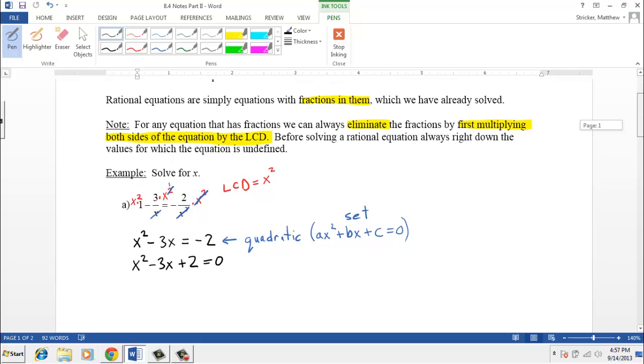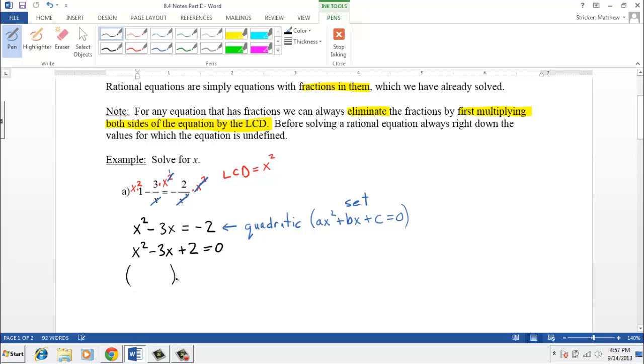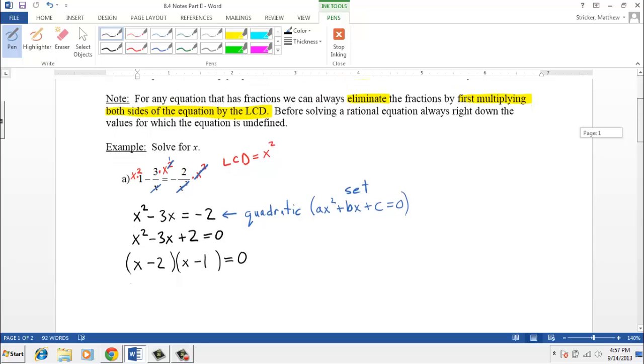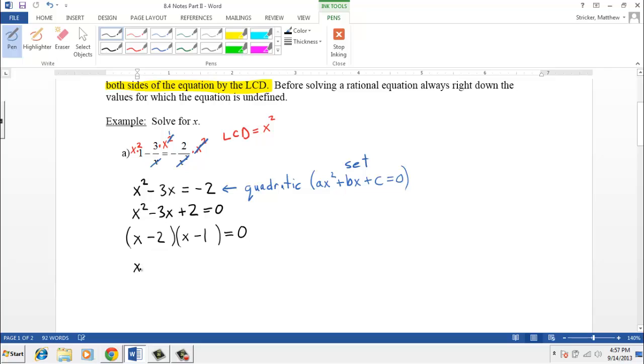And now we can go ahead and apply our zero factor property. So if we factor, we end up with x minus two and x minus one. Which means x minus two has to equal zero, or x minus one has to equal zero. And add two to both sides, giving x equals two. Then add one to both sides, giving x equals one.